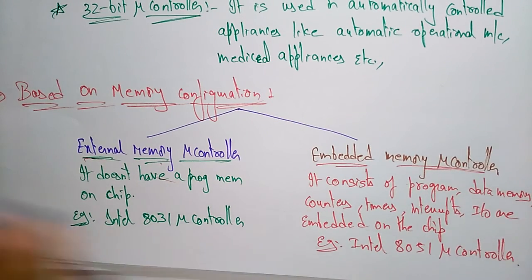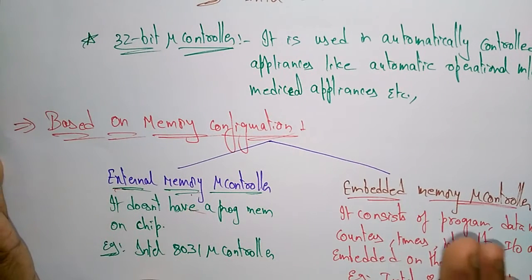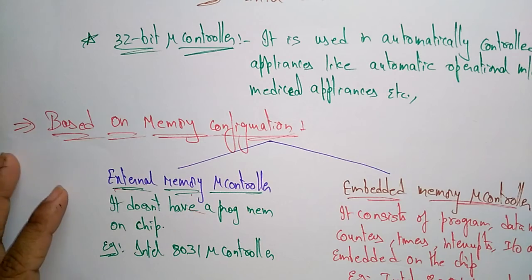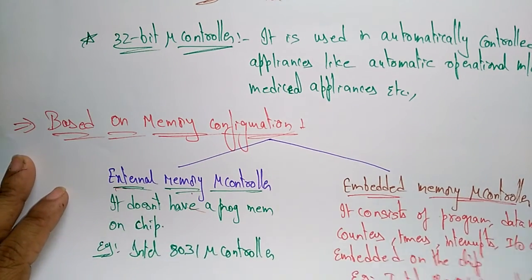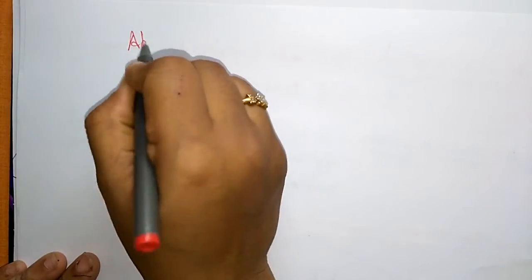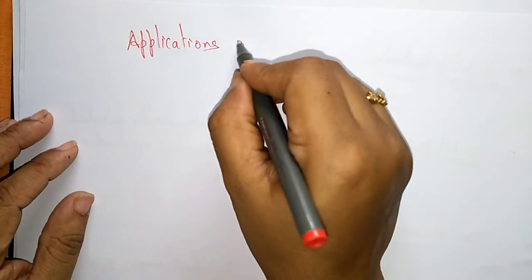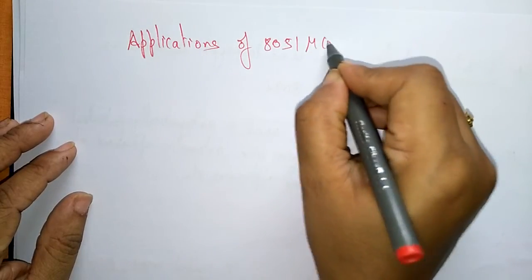Based on bit configuration, microcontrollers are of three types: 8-bit, 16-bit, and 32-bit. Based on memory configuration, they are of two types: external memory and embedded memory microcontrollers. Now let us see the applications of the 8051 microcontroller.